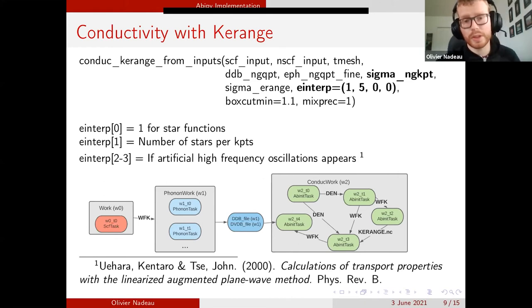If we look at our workflow, we now have five tasks. The first two tasks are the same: the self-consistent and the non-self-consistent input. Then we do the interpolation using star function on the sigma grid. Then we'll do the non-self-consistent band structure calculation to obtain the new wavefunction file. And finally, we calculate the conductivity.